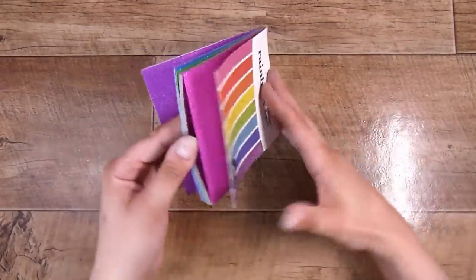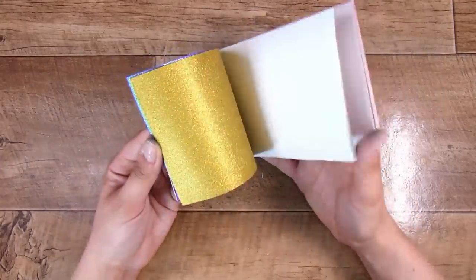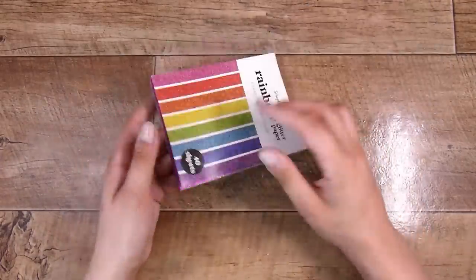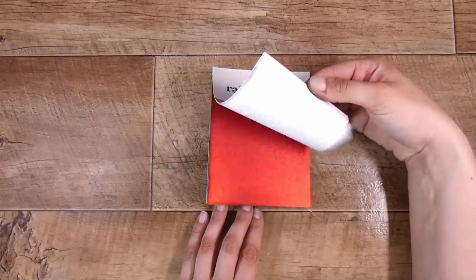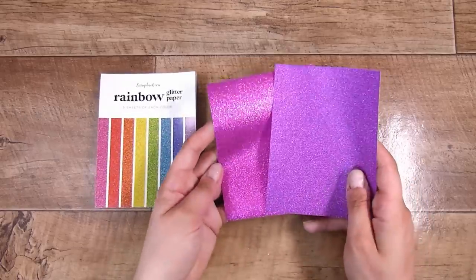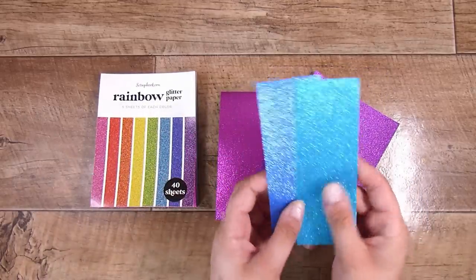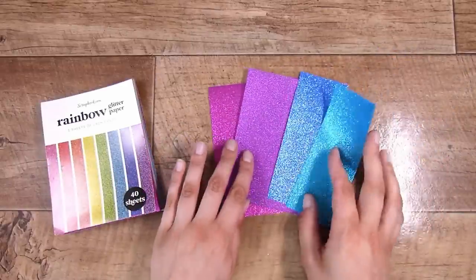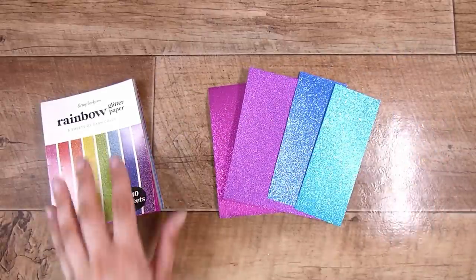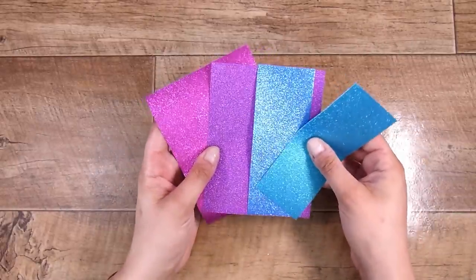Now I am going to use some of this glitter paper today, this one happens to be from scrapbook.com. I would advise that you use some origami-ish weight paper because we're going to be doing some folding. I like the idea of having two different colors to my butterfly, the upper and lower part, so I've chosen the pink and the purple glitter paper and then the blues, a darker blue and a lighter blue.